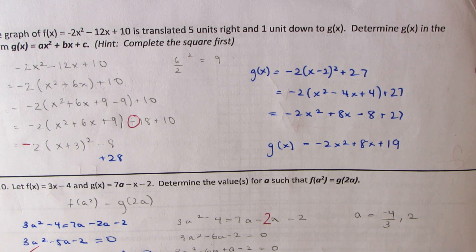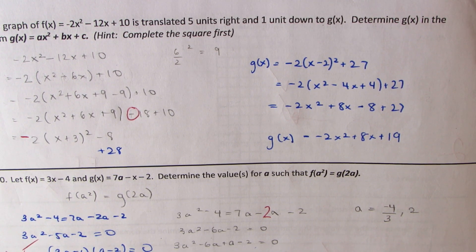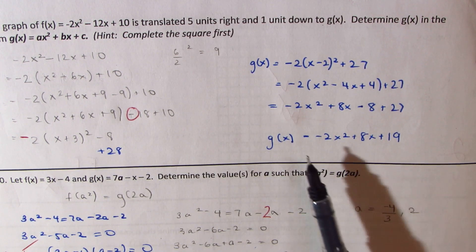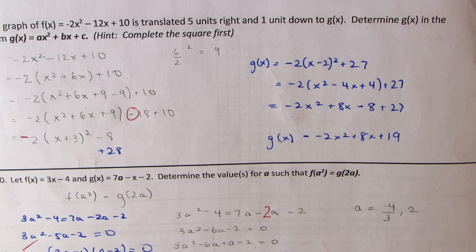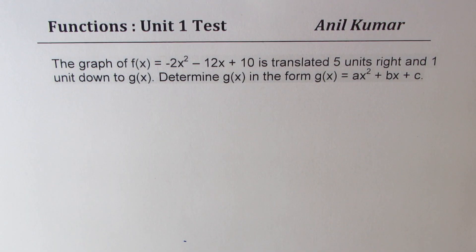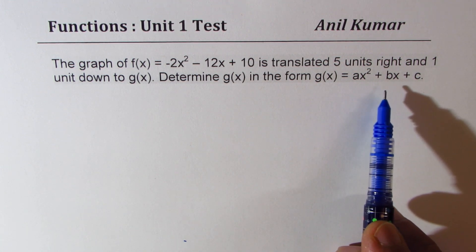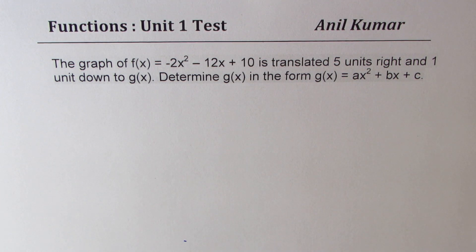If you complete the squares you might make a mistake as a student did, and you can see how lengthy that process is. I've done the correction and shown the answer. However, here is a direct method which I prefer you to adopt. The question is: f(x) = -2x² - 12x + 10 is translated 5 units right and 1 unit down to g(x). Determine g(x) in the form ax² + bx + c. There are different ways to do it.